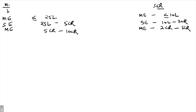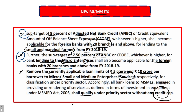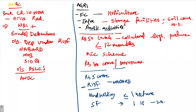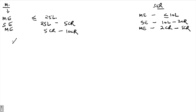Previously there were limits on how much a bank could lend to a services enterprise for it to count under priority sector lending — 5 crore and 10 crore per borrower — but that limit has now been removed. There was no such limit in manufacturing before either. Also, the khadi and village industries (KVI) sector is to be categorized as micro enterprises, with the 7.5% sub-target applicable.